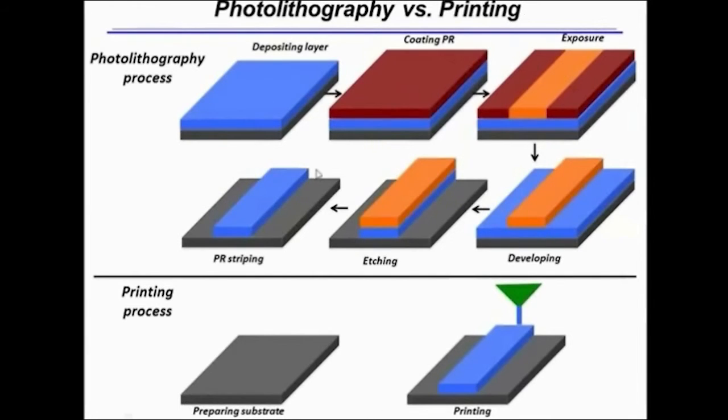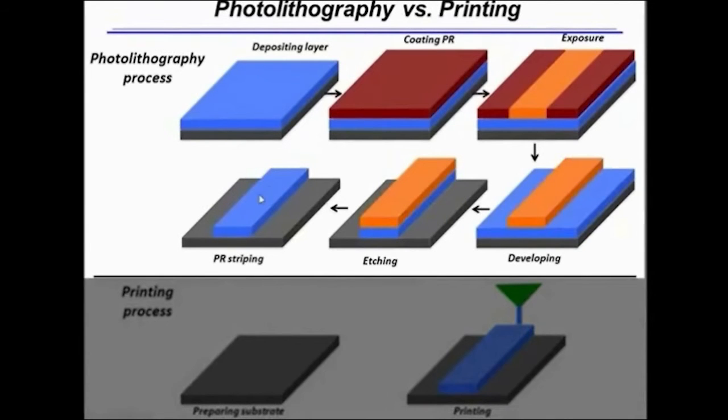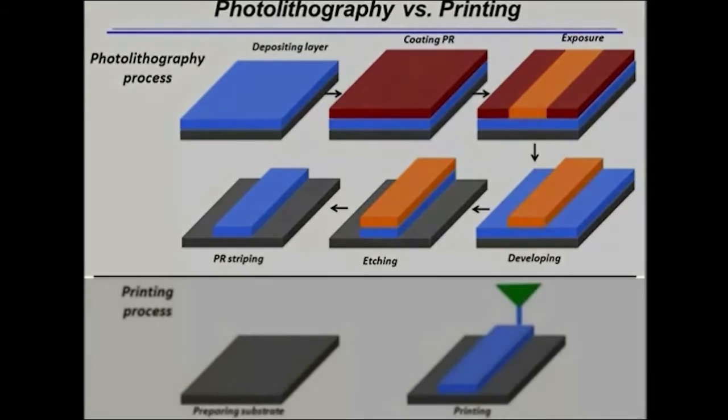You know that in photolithography, if you want to produce, let's say, a metal line, you first start with depositing material all over the substrate, you coat with photoresist, you expose, you develop the photoresist, and you etch. That produces your line in a subtractive process. That is, you've removed material that you initially deposited.